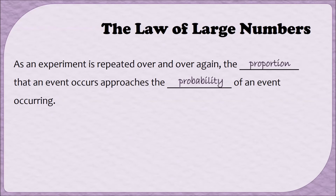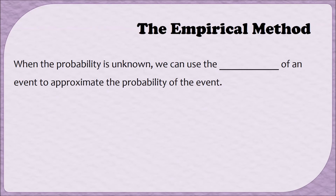We'll use the Law of Large Numbers to adopt another method called the empirical method, in case we don't know the probability of an event. When a probability is not known, we can use the proportion of an event to approximate the probability of the event. A proportion and a probability are technically different things; however, for our purposes in this series, we will be using the two words fairly interchangeably. The law of large numbers and the empirical method tell us that they're approximately the same.